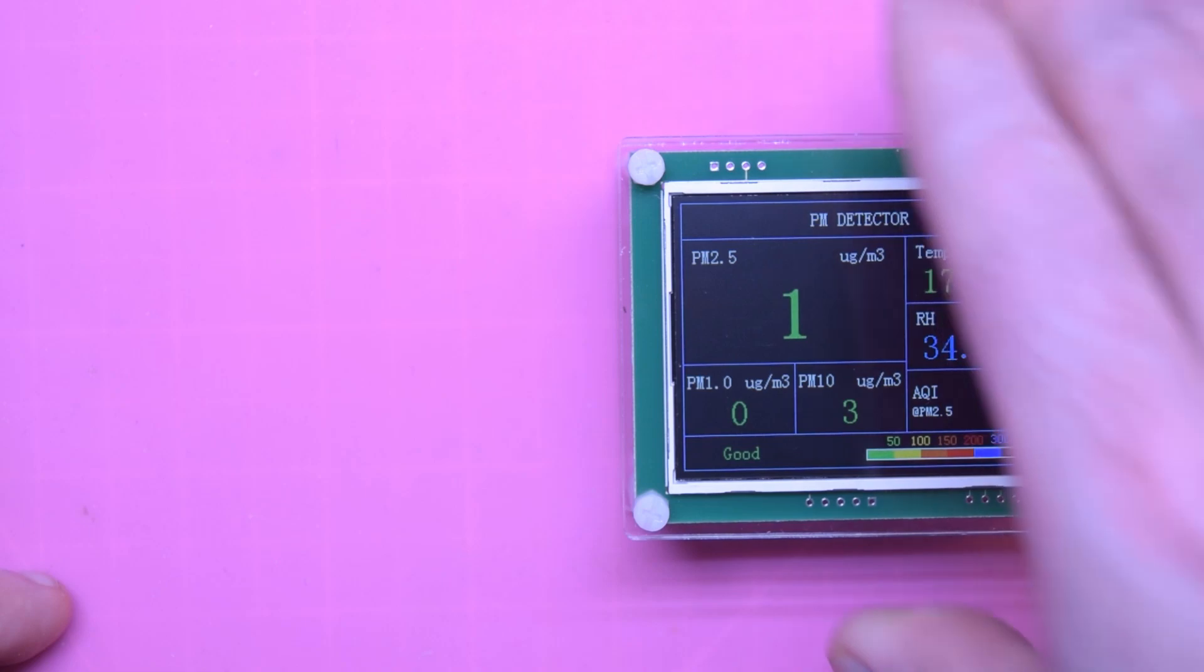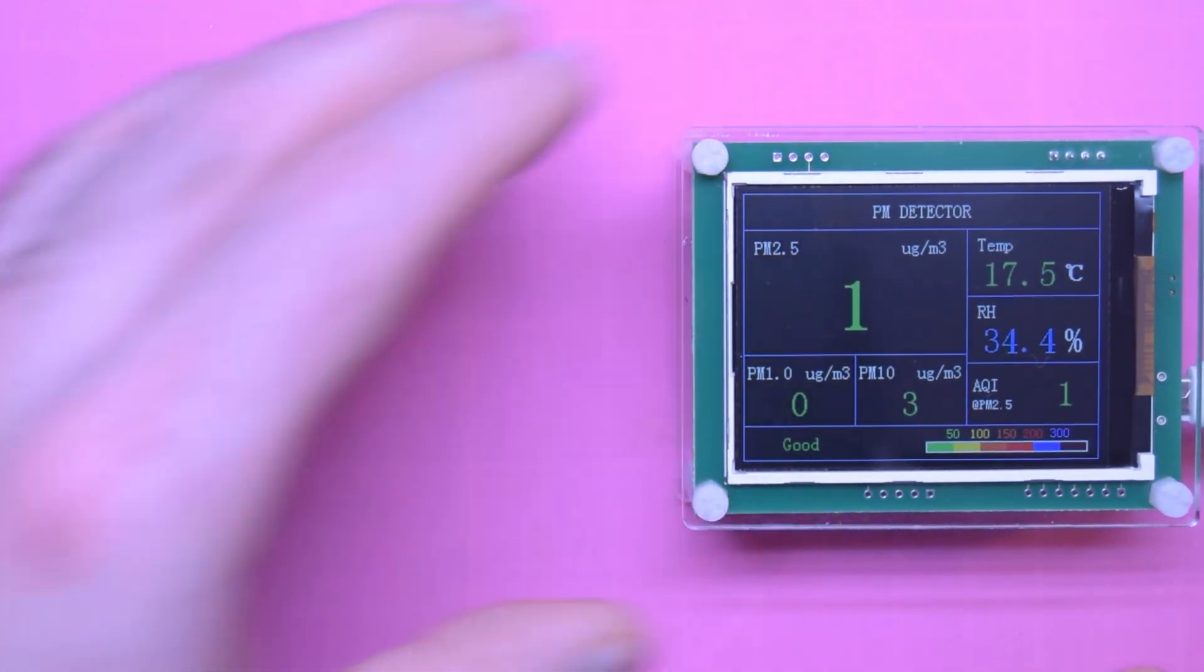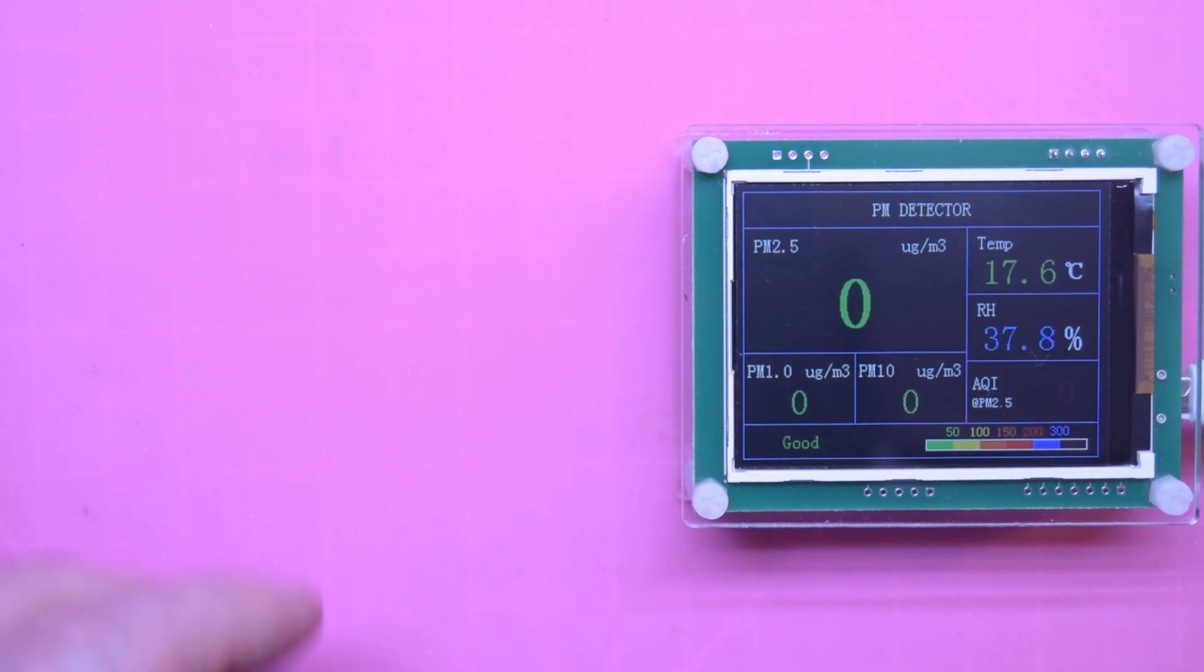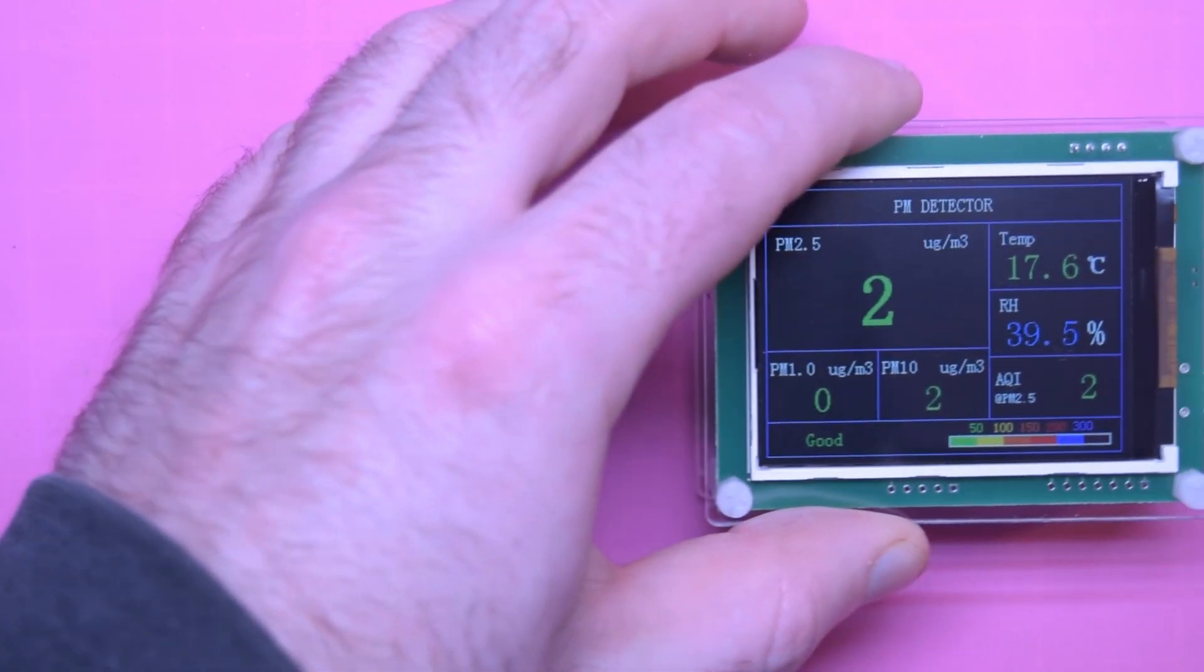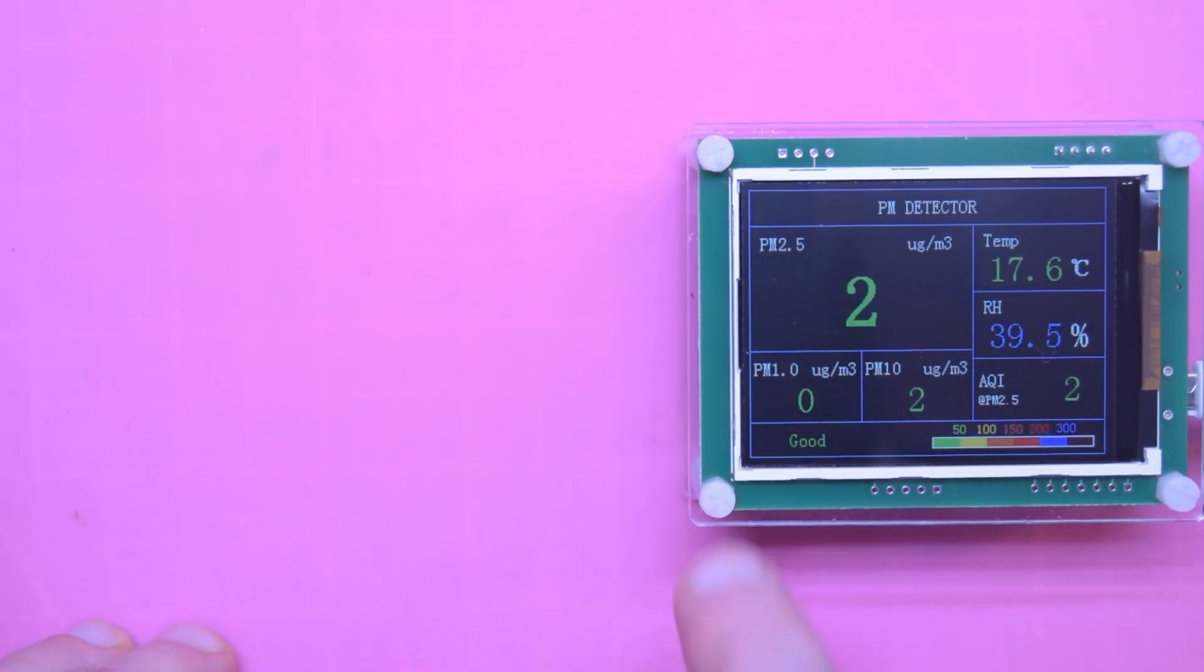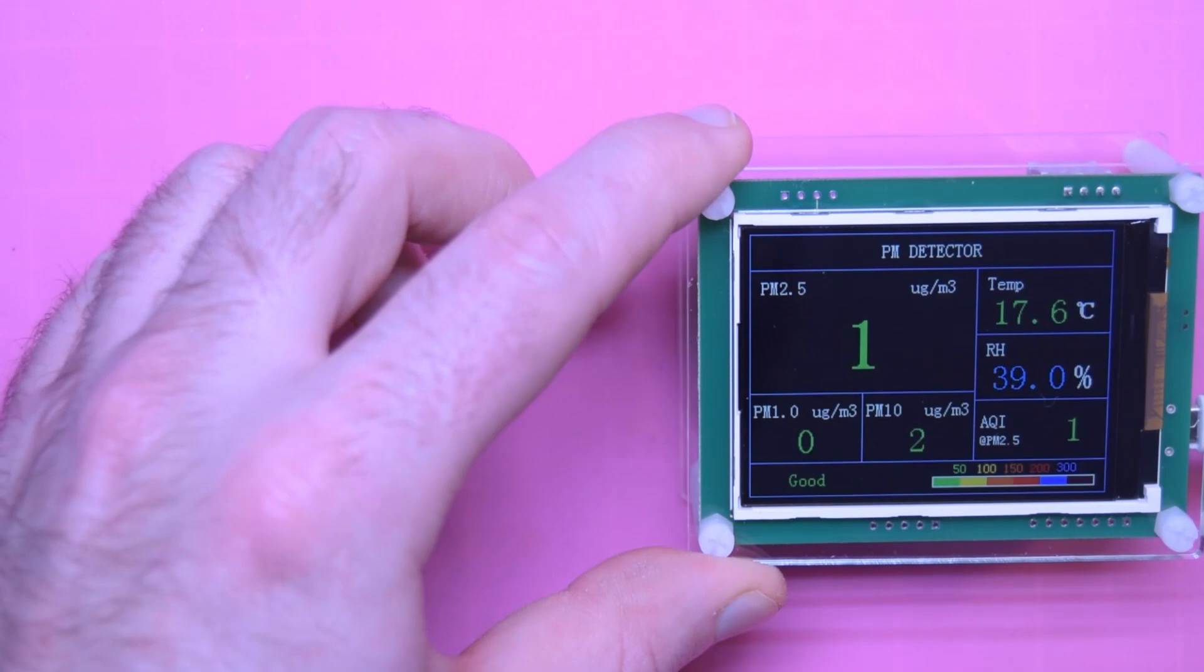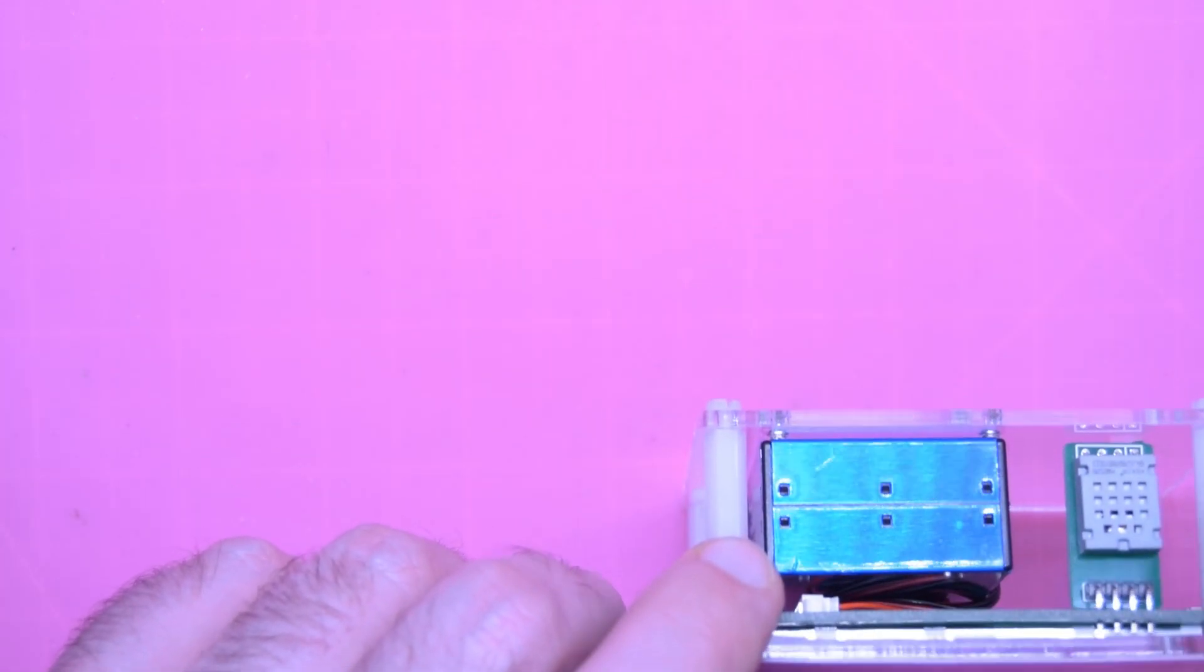Well, banggood.com sent me this guy here to take a look at. This is an air quality monitoring device. It uses a PM 2.5 sensor, so that guy here. It has apparently a laser that spins around, and the light that's diffracted by the particles inside will register, and then it will pick it up here. It also has a temperature and humidity sensor.